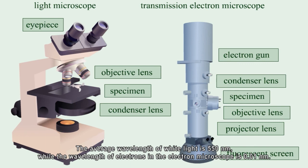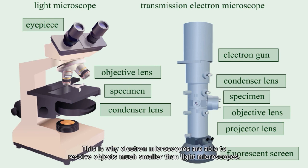The average wavelength of white light is 550 nanometers, while the wavelength of electrons in the electron microscope is 0.01 nanometers. This is why electron microscopes are able to resolve objects much smaller than light microscopes.